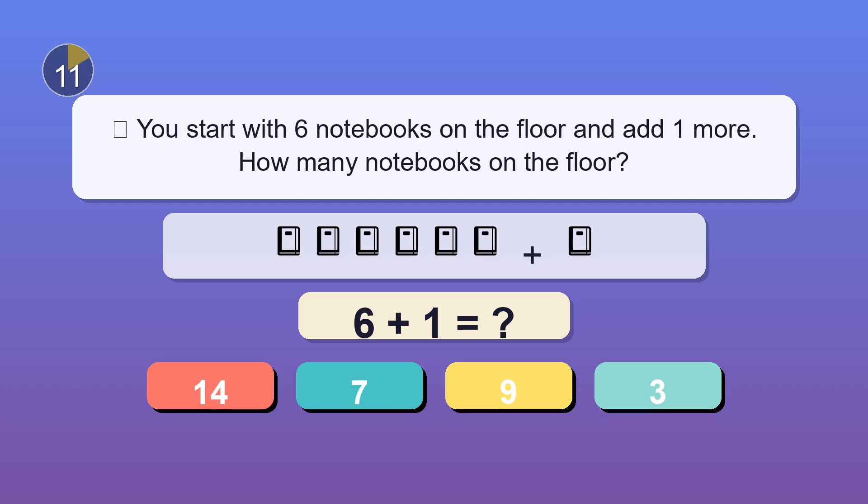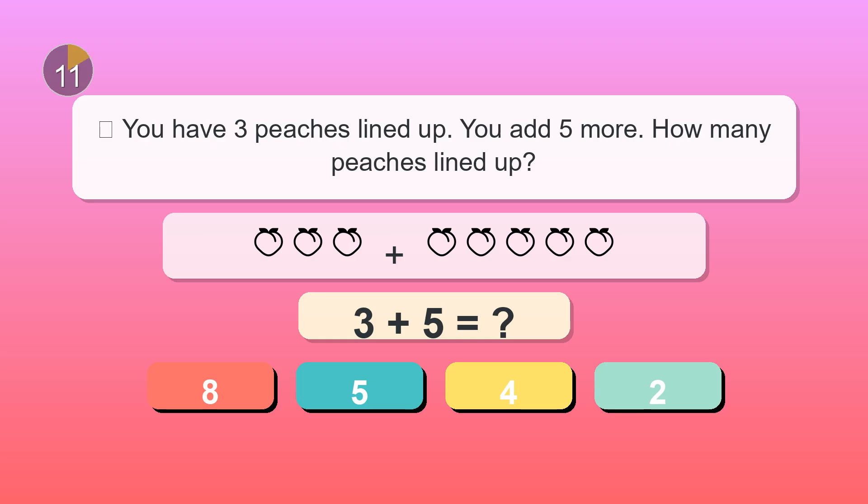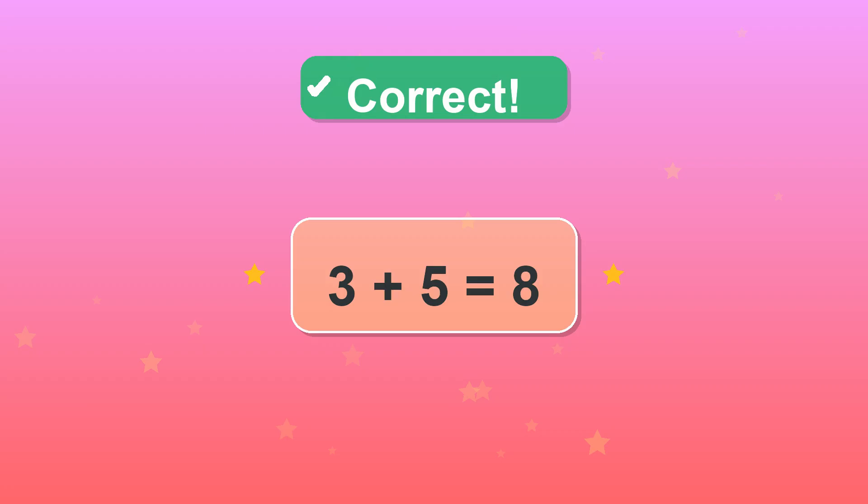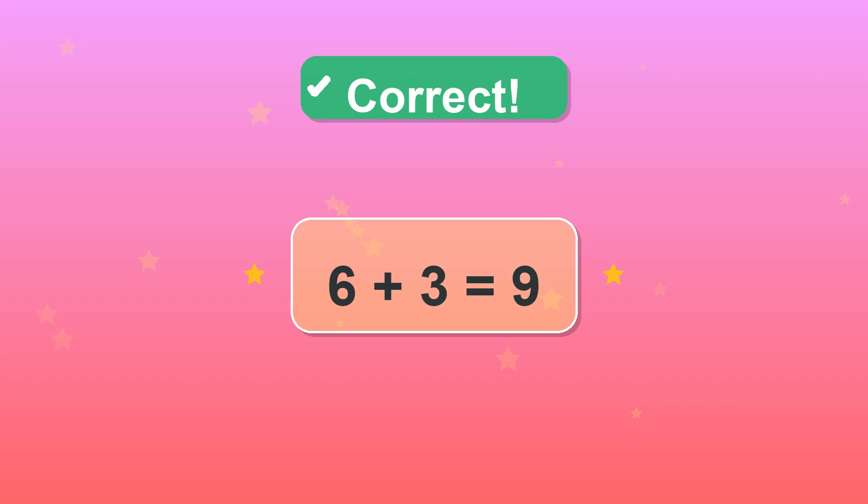You start with six notebooks on the floor and add one more. How many notebooks on the floor? Seven. You rock. You have three peaches lined up. You add five more. How many peaches lined up? You're right. Eight. You collect six pens for a project and add three more. How many pens now? Nine. You nailed it.